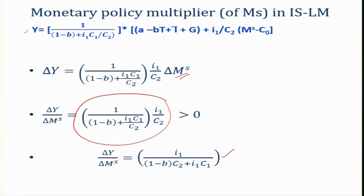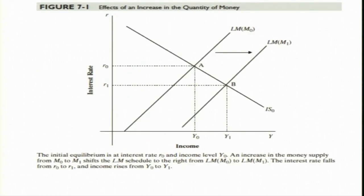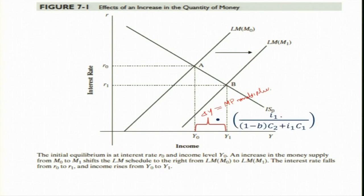Due to a change in money supply, GDP and output will increase by this multiplier times del-M-S, which equals del-Y. This is the multiplier effect of monetary policy in a macroeconomy within the IS-LM framework. Presenting this graphically, del-Y is due to the monetary policy, so del-Y equals the monetary policy multiplier times del-M-S.